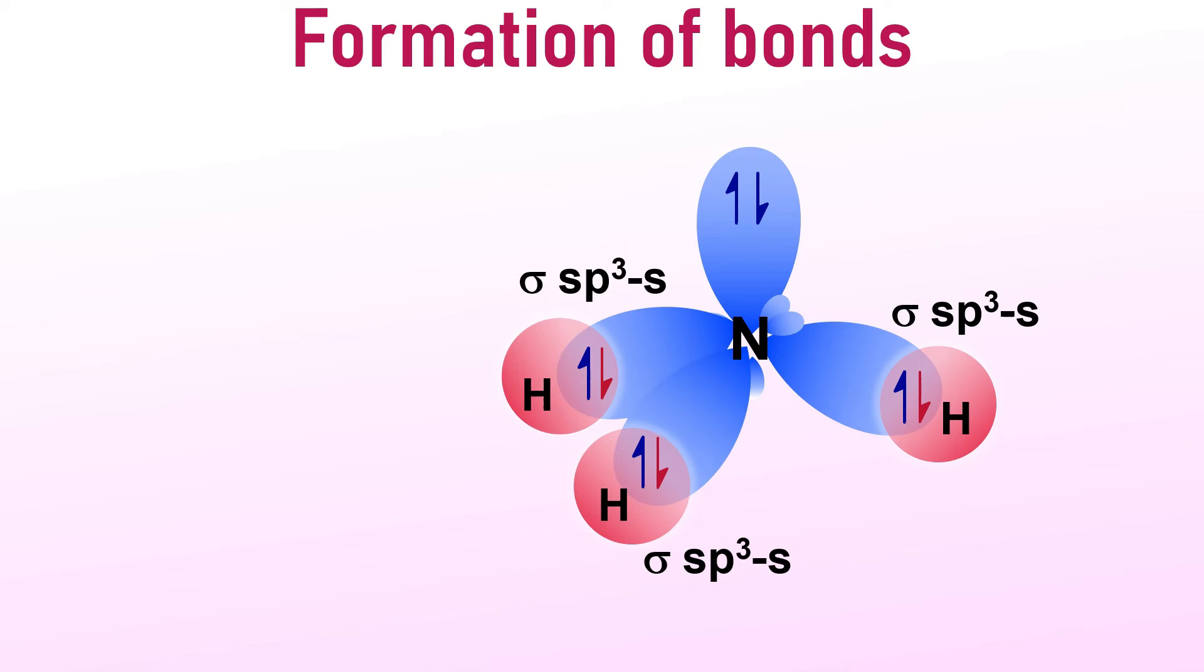Now, there are four electron pairs around the nitrogen atom. Among them, the electron pair that is not participating in the bond formation is referred to as a lone pair.